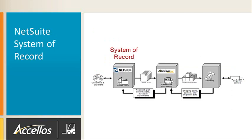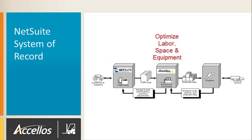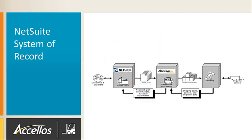NetSuite remains the system of record. Purchase and sales orders are entered into NetSuite and seamlessly integrated with Acellus One Warehouse. Acellus One Warehouse optimizes the use of labor, space, and equipment to process the orders and transmit confirmations back to NetSuite. We will observe these processes in this brief demonstration.